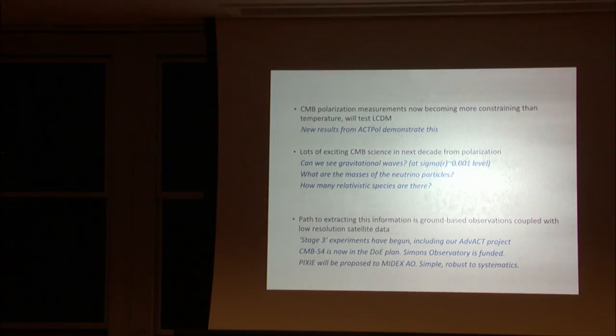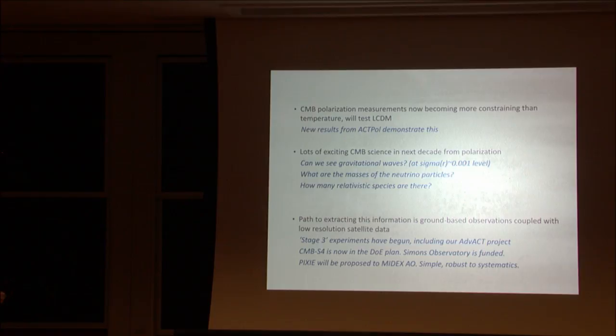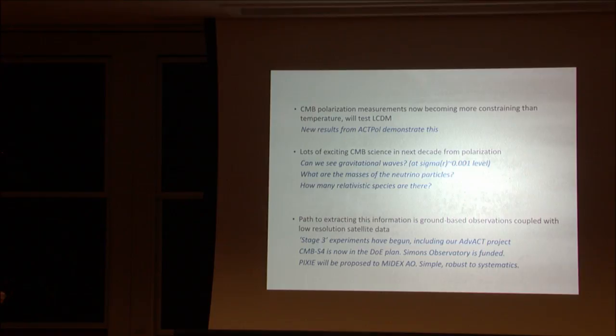In summary, CMB polarization is now getting to be better than temperature for constraining cosmology. There's exciting science to be done — real measurements like neutrino masses — and the path forward is a suite of ground-based experiments coupled with low-resolution satellite data. A lot of this is going to be happening here at Princeton.